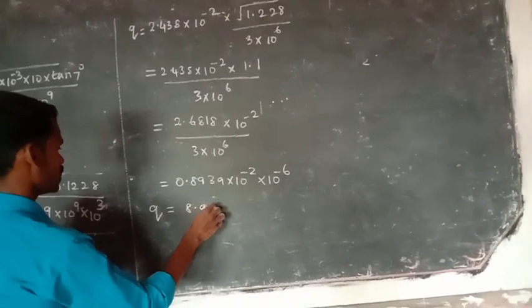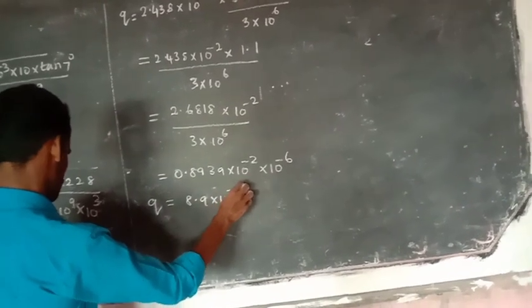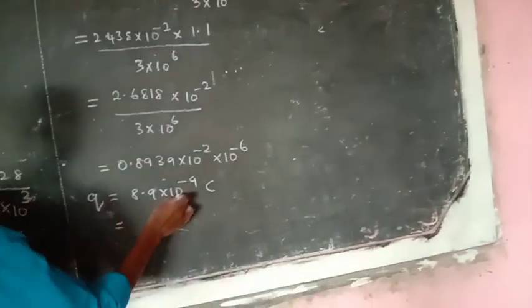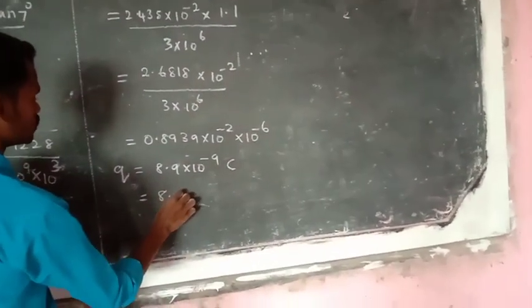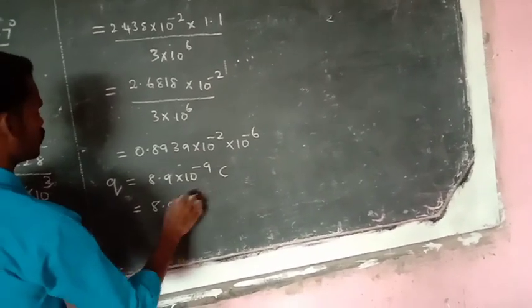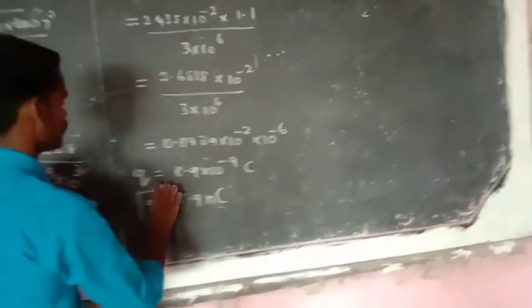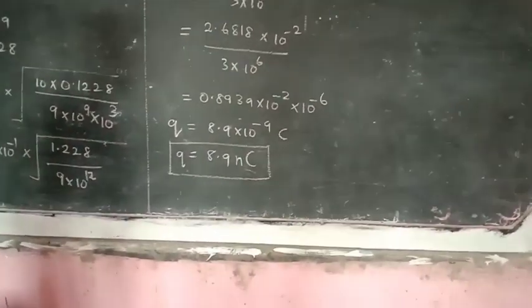For the final answer: 1.995 into 10⁻⁴, then 2.995 into 10⁻⁶. Now we write this result. The charge equals 2.995 into 10⁻⁶ C, approximately 8.994. Thank you.